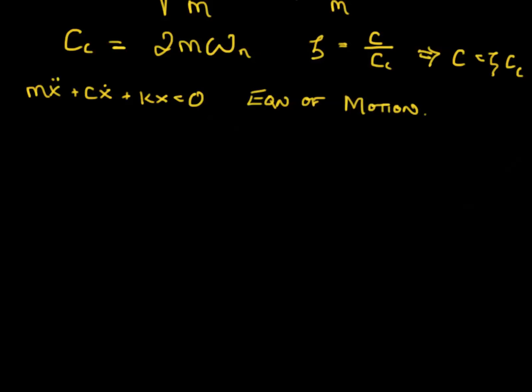Alright, so if I take the equation of motion and divide both sides by M, I end up with X double dot plus C over M X dot plus K over M X equals zero. But we know what C over M is, right? If I follow this through, C is equal to zeta times C critical, which is 2M omega n. That means that C over M is equal to 2 zeta omega n.